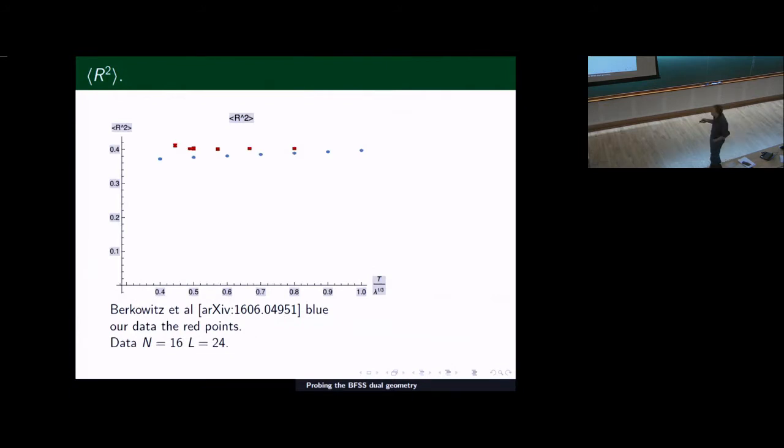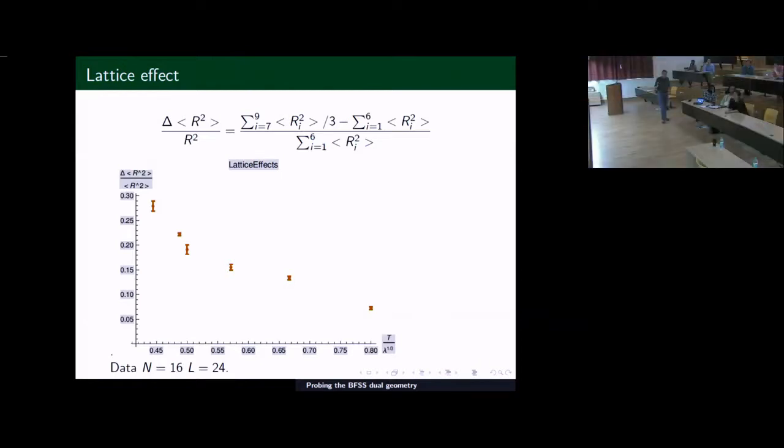R squared is also comparable. So the red again are our data and the blue are taken from this paper. We look at it in a little bit more detail because the Wilson term, the way we've introduced the Wilson term splits the X's into those in the same direction as the gammas and the other one. So we've split it into an SO(6) and an SO(3) sector.